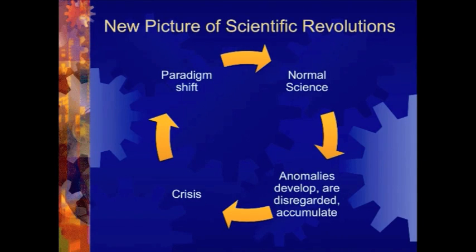This is the new picture of scientific revolutions as Kuhn understands it. You start over here in a state of normal science — that's just scientists going into the lab doing their thing. Over the course of time, anomalies will develop. They tend to be discarded, explained away. And then other anomalies develop and start to accumulate. Once the anomalies accumulate too much so they can't be ignored, we shift into the state of crisis science.